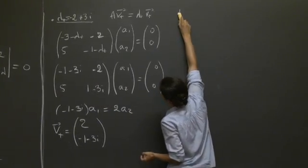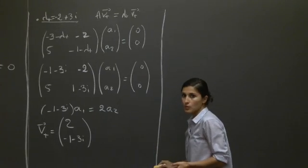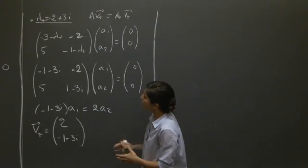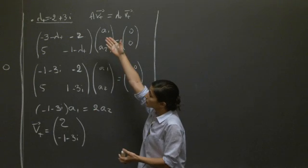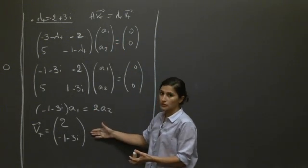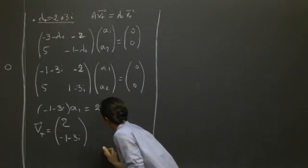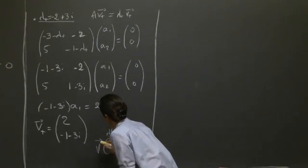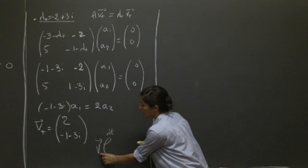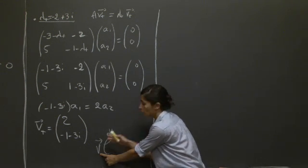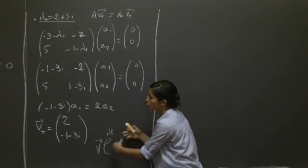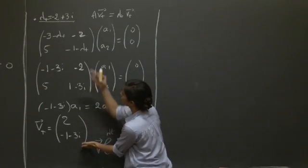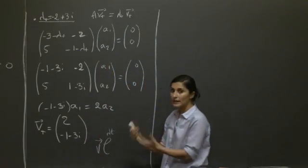So now what? So what we need to remember is the meaning of all of this. Seeking the eigenvalues and the eigenvectors is basically equivalent to seeking a solution in the form exponential lambda t, with the direction of the eigenvector associated with this eigenvalue. So now that we actually have this eigenvector and this eigenvalue, we can write down the solution.